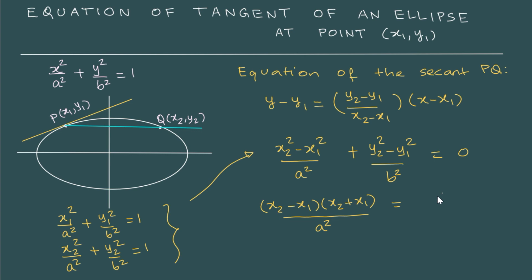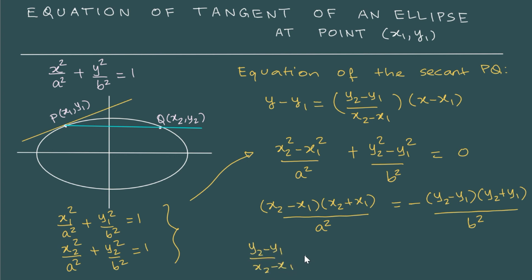Taking the other term to the right-hand side, we have minus y2 minus y1 times y2 plus y1 by b squared. We are attempting to isolate the slope of the secant line, which is y2 minus y1 by x2 minus x1. Rearranging, we get the slope equals minus b squared by a squared times x2 plus x1 by y2 plus y1.